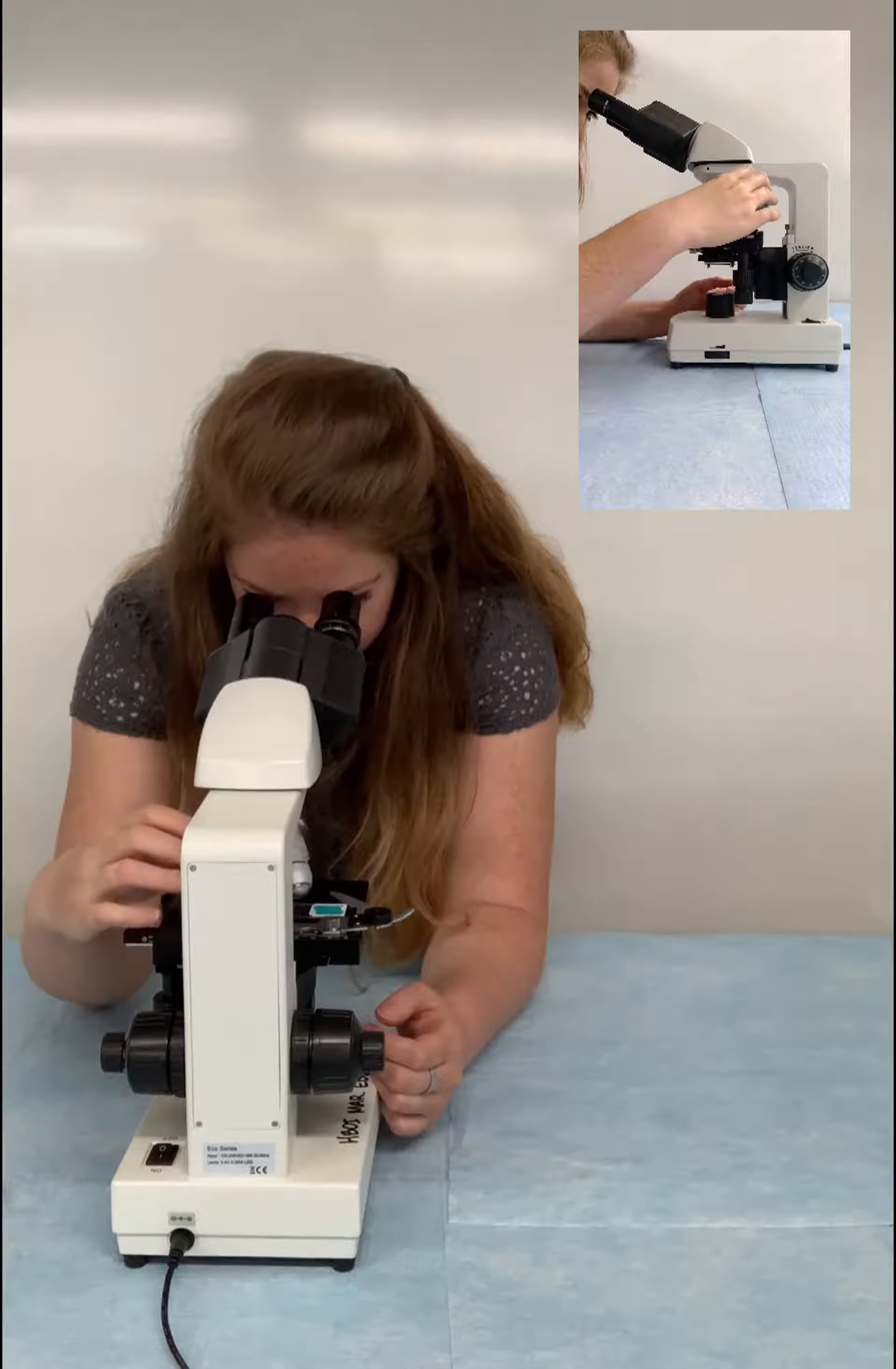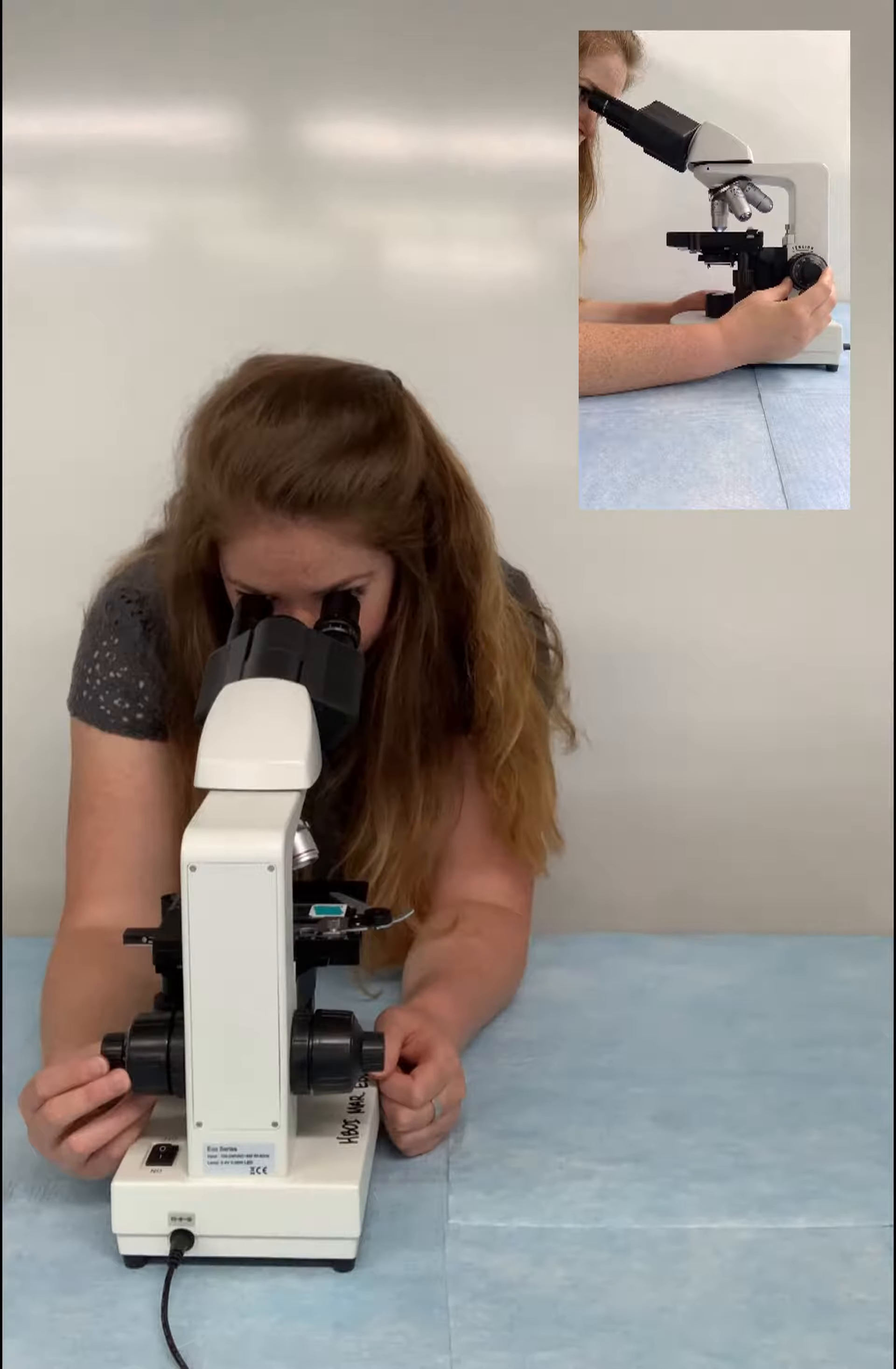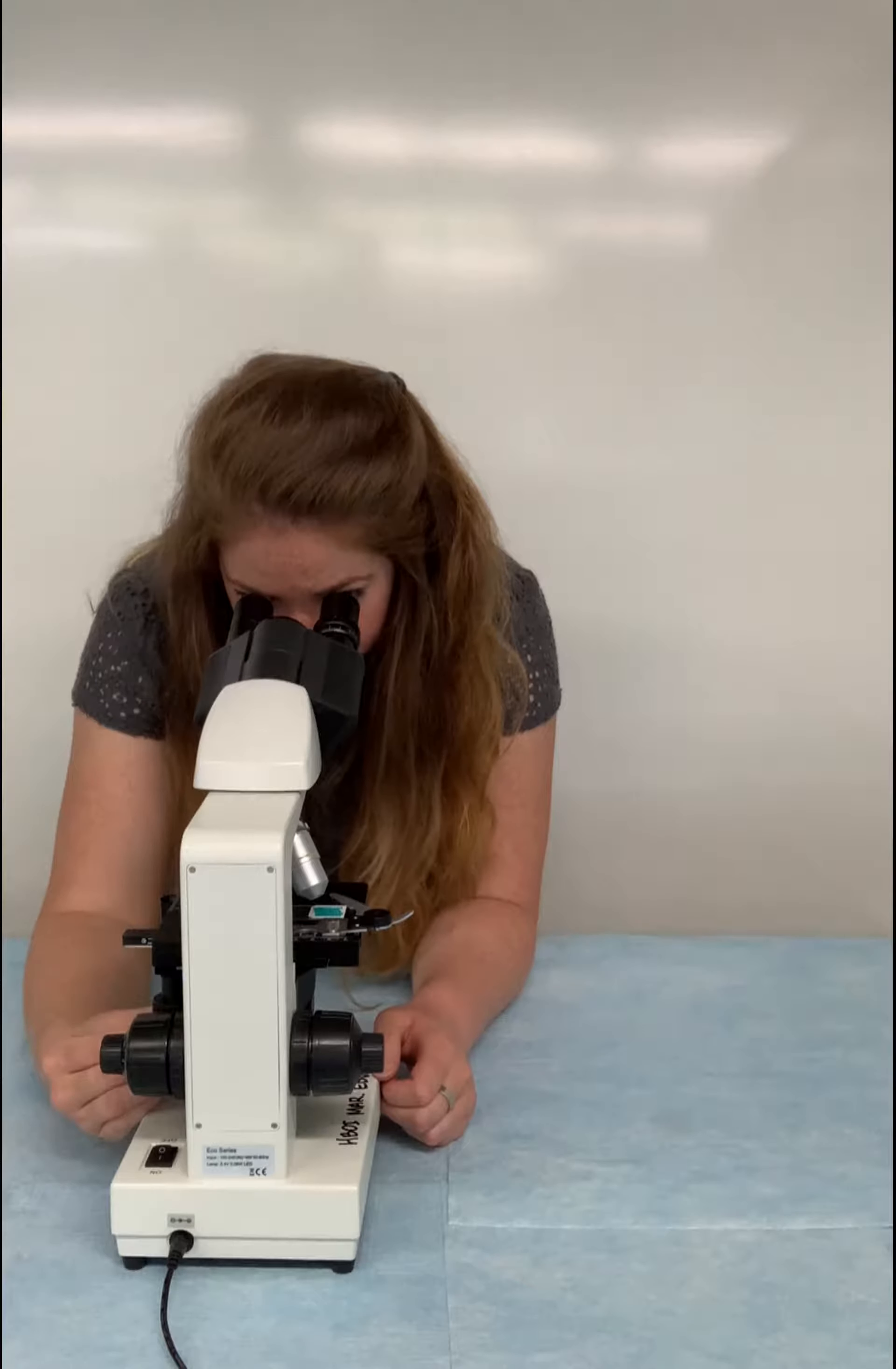We're going to switch over to our yellow objective and this is 10 times magnification. When you switch objectives you're going to have to adjust your focus a small bit. Now you can see we have a little bit of a better view, a closer view of our specimen. Let's go to a higher power and a higher magnification. The blue objective here has 40 times magnification, so 4 times the magnification of our last yellow objective.